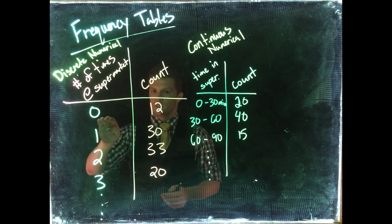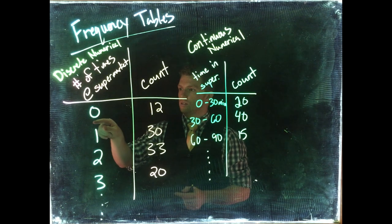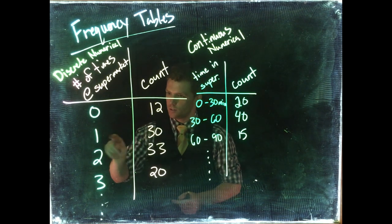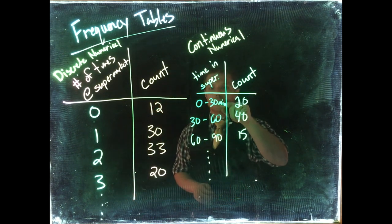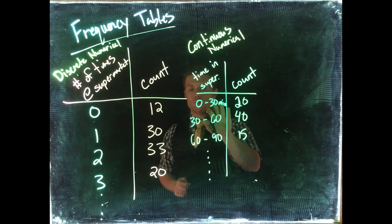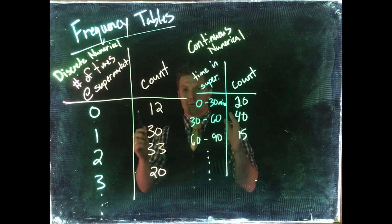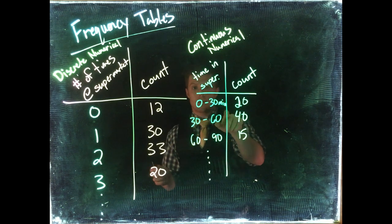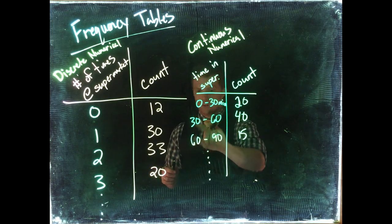The discrete are nice because when you count it's just how many people said zero, how many people said one. For the time, because it's continuous, we need to put these bins. We need to give it a range so that people who fall into the bin we can count. So we go zero to thirty, thirty to sixty, sixty to ninety.